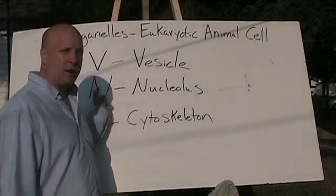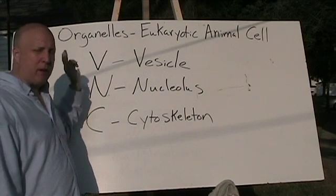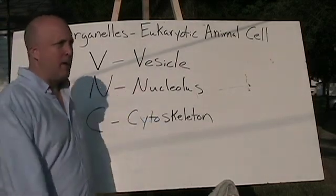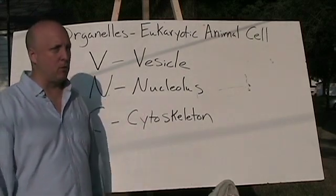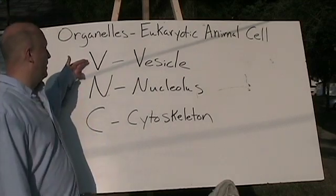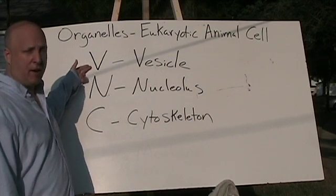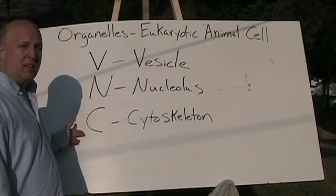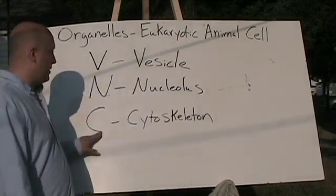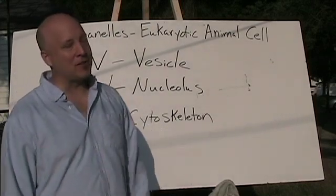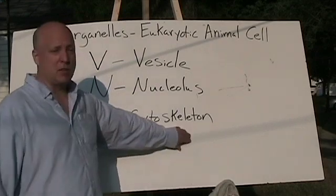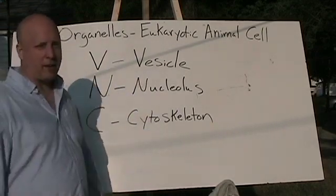Here are some more organelles for a eukaryotic animal cell. My mnemonic method here is 'Very New City' — V-N-C. Typically I don't have to go over this very much. Please repeat after me: Very New City. V — Vesicle. N — Nucleolus. C — Cytoskeleton. I wonder what the cytoskeleton does — just like the skeleton of our body, it gives the cell support.